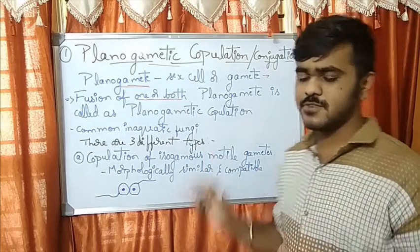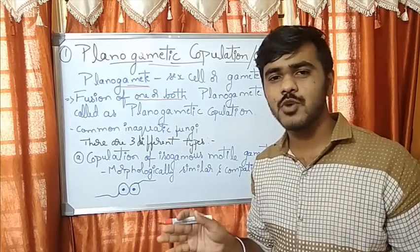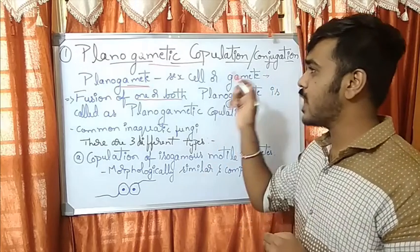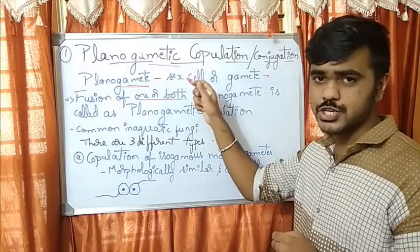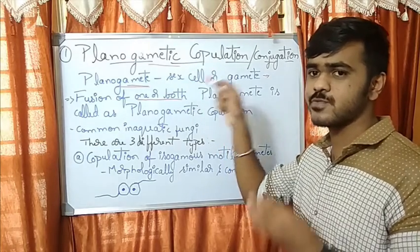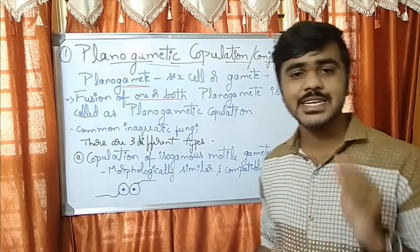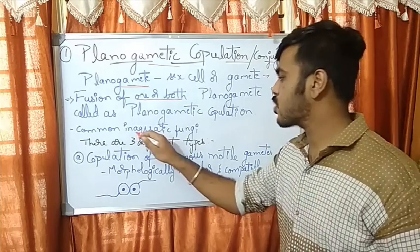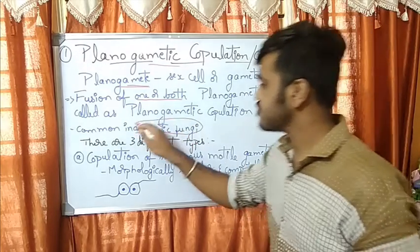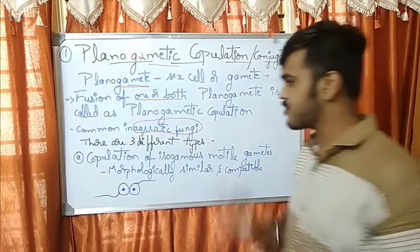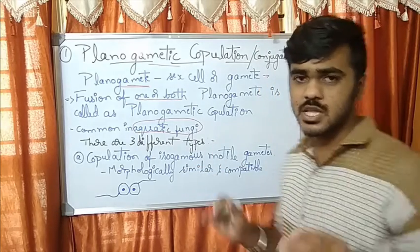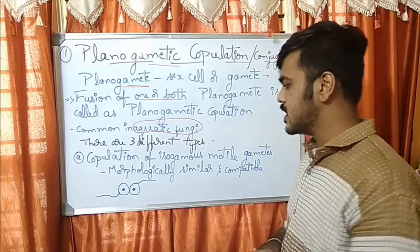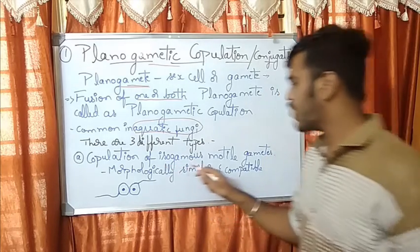Since a planogamete is motile, it needs an aquatic medium. To exhibit this type of method of sexual reproduction, it needs water — that is, it is usually present in aquatic fungi. Among planogametic copulation, there are three different types of combinations possible.